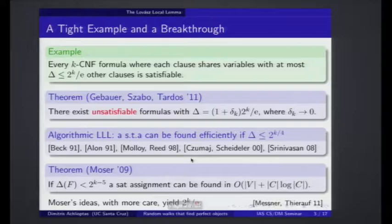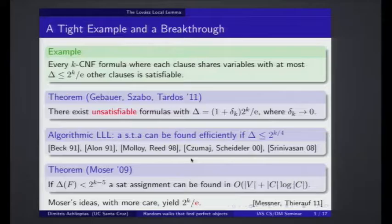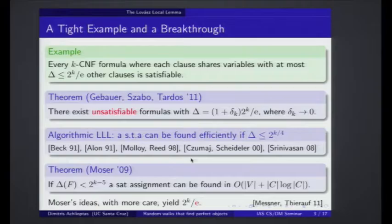Then there was a breakthrough by Robin Moser in 2009, who showed that you can match the LLL bound almost up to a constant, and the running time is very low — proportional to the number of variables in the formula and the number of clauses times the logarithm of the number of clauses. You can refine Moser's argument to completely match what you get from the existential LLL. What was perhaps most surprising about Moser's argument was that the algorithm by which you find the satisfying assignment is incredibly simple. The analysis is ingenious, but the algorithm itself is brilliant.